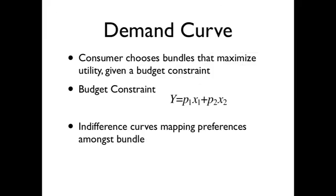So we can back out the demand curve from here. The consumer is choosing bundles that are maximizing utility given the budget constraint. The budget constraint is in general notation like we saw in coffee and donuts before. And the indifference curves are ranking preferences amongst the bundles.